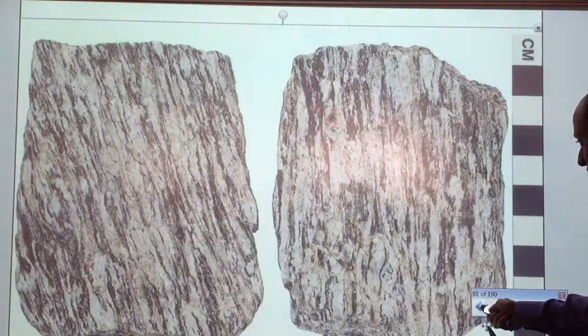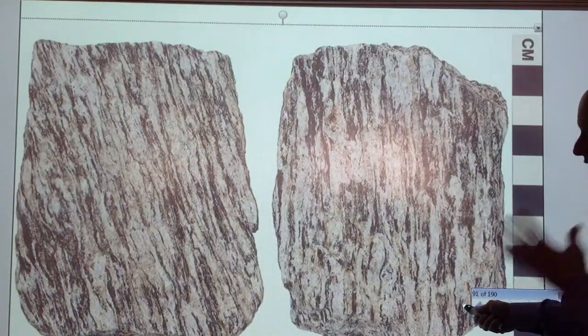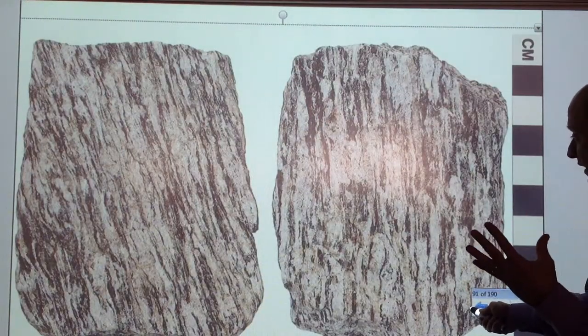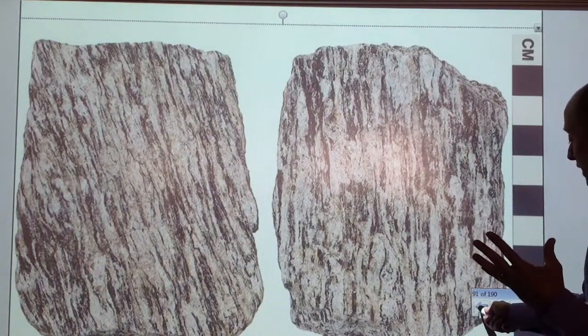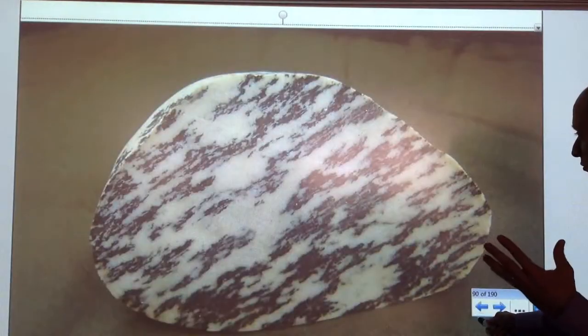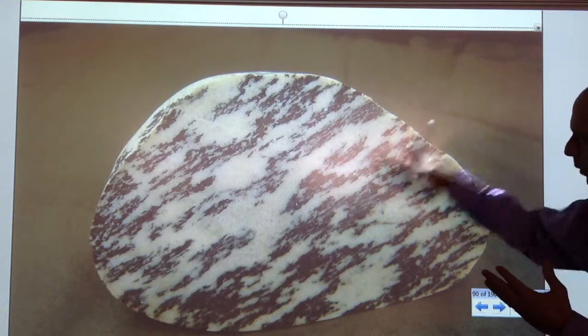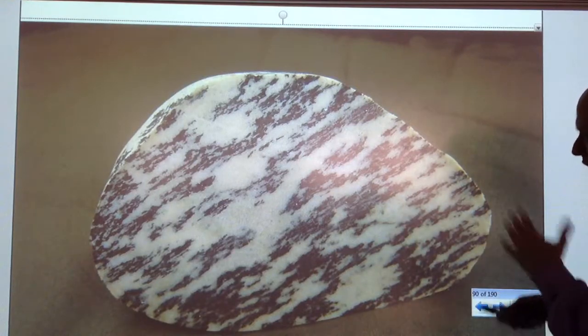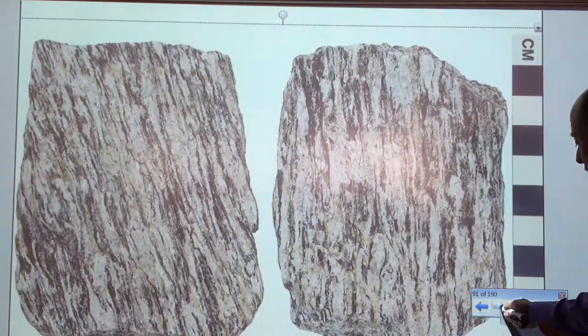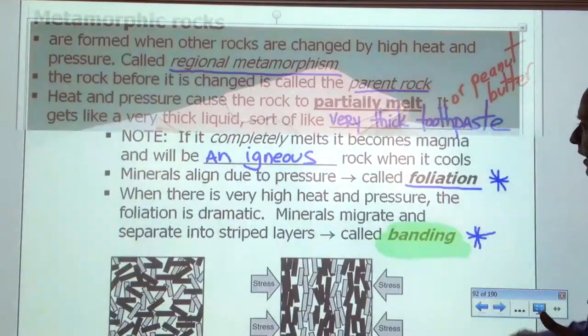That banding is what we're seeing in these rocks. You really see the banding here — the black minerals really jump out. You can see it as well. It helps that this rock is cut and polished; it really helps you see it.